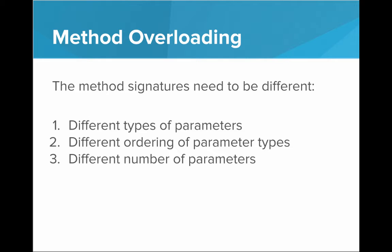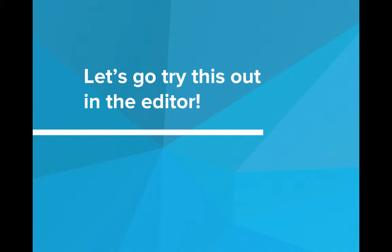So, to perform method overloading, the method signatures need to be different. They either need to have different types of parameters, different ordering of the parameter types, or a different number of parameters. Let's try this out in the editor.